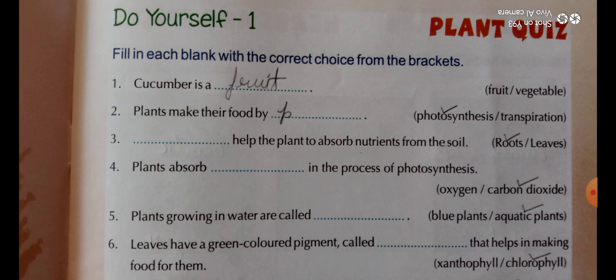Question three: what helps the plant to absorb nutrients from the soil — roots or leaves? The answer is roots. Question four: plants absorb what in the process of photosynthesis — oxygen or carbon dioxide? The answer is carbon dioxide.